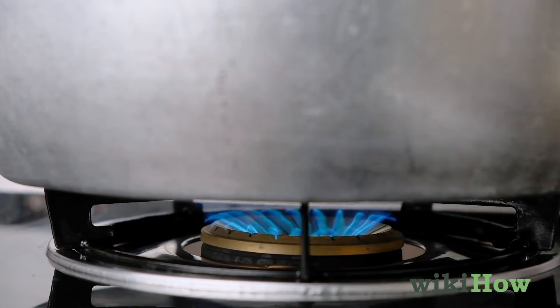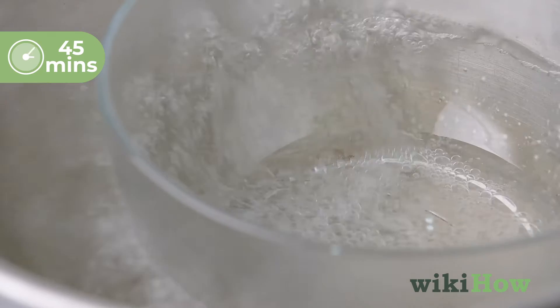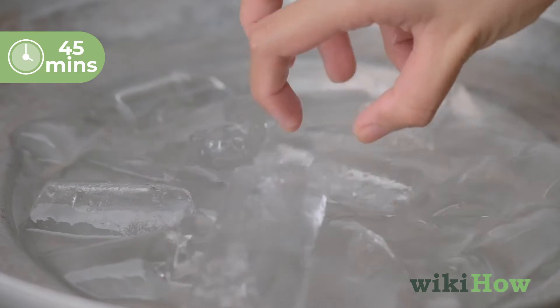Bring the water in the pot to a boil and let it boil for around 45 minutes. Replace the ice whenever it melts.